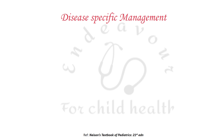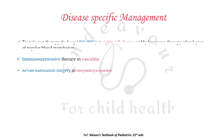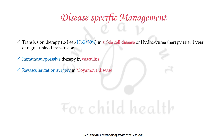Disease-specific management is also important. If the underlying cause is sickle cell disease, hemoglobin S must be kept less than 30% by transfusion therapy; hydroxyurea therapy may also be required after one year of regular blood transfusion. Immunosuppressive therapy is required in vasculitis, and revascularization surgery is required in moyamoya disease.